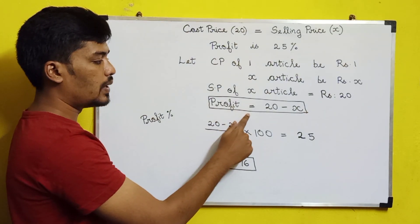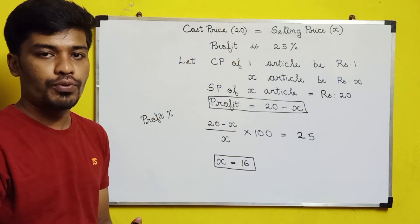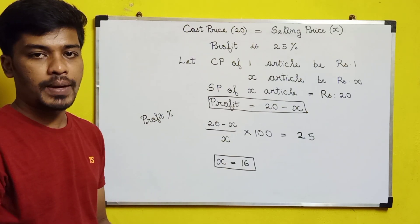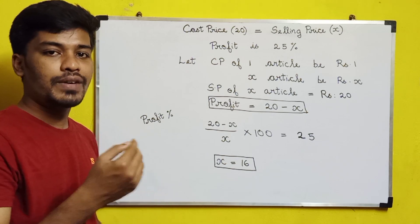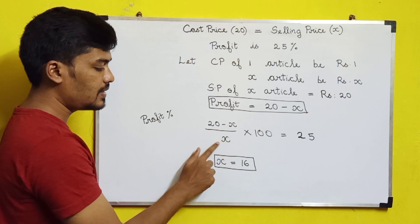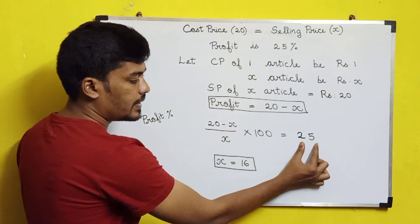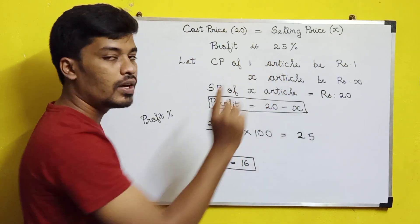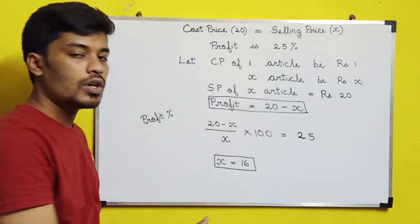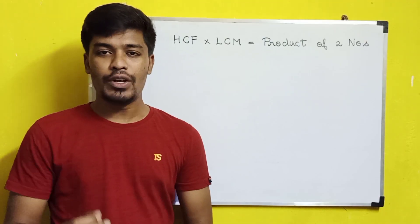Profit percentage = (Selling Price − Cost Price) / Cost Price × 100. So: (20 − x) / x × 100 = 25. Solving this gives x = 16. So the answer is 16.